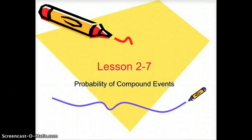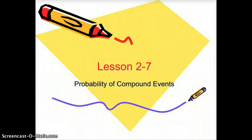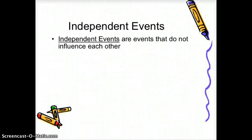Today we're talking about probability of compound events, where more than one thing is happening. Independent events are events that do not influence each other. For example, if you flip a coin and roll a die, those would not have any influence on each other. Those are independent events — the first kind we'll be talking about today.